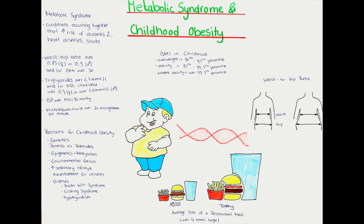The treatment of childhood obesity can be difficult as the child in younger ages is usually not the primary decision-maker of their dietary habits or free-time activities, so close collaboration with a parent is usually necessary. Depending on the underlying cause, a combination of dietary counseling, activity therapy, and behavioral therapy are used. Operative therapy in children and adolescents is usually only used in extreme cases after thorough and careful evaluation, and is generally a last resort option.